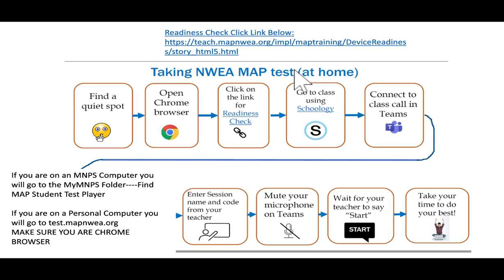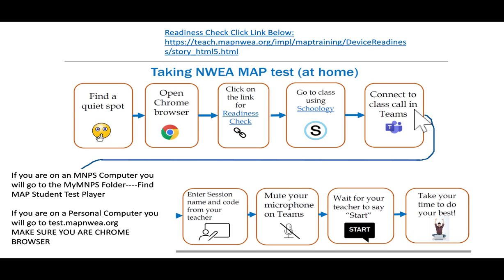After you've gotten the clear from the readiness check — and you don't have to do this, but it helps with troubleshooting anything that may be wrong — you can go to Schoology and get logged in. When you are ready to start the test, students are going to go to Schoology like they normally would, go to their advisory group, and join a Teams meeting. The Teams meeting will allow them to have a proctor. Their advisory teacher is going to be proctoring students and have control over the test while they are taking it.